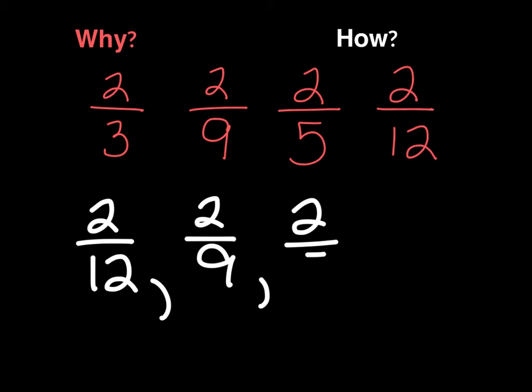And then my next one is going to be 2 9ths, and then 2 5ths, and then 2 3rds. So now I have ordered these fractions that have the same numerator, but we do the opposite of what we do when we have the same denominator. We're looking at the largest denominator is the smallest, and the smallest denominator is the largest. So that can get a little confusing, and you're going to have to be careful.